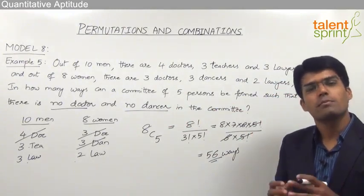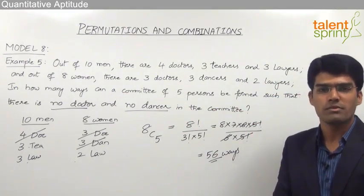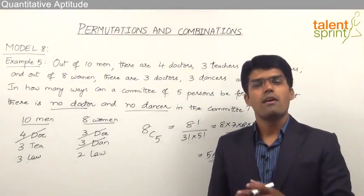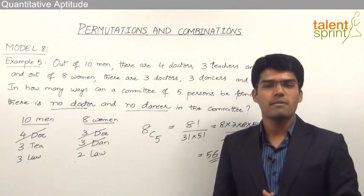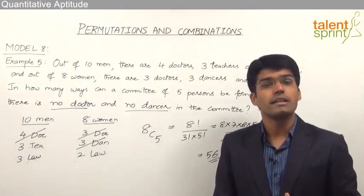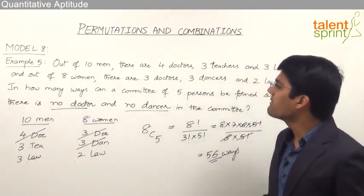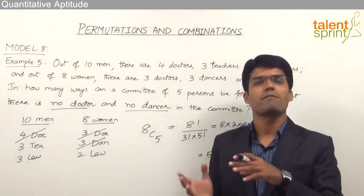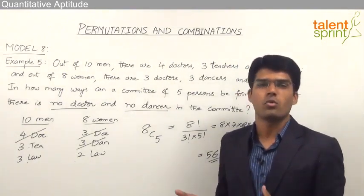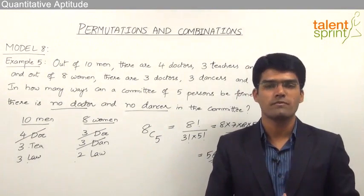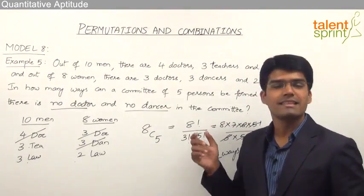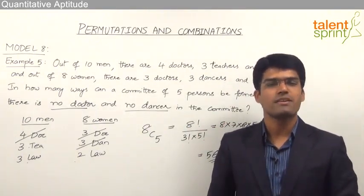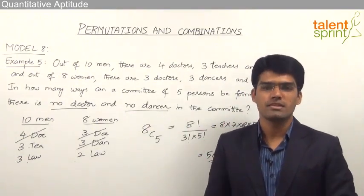Whenever a particular type of person is not required, we simply leave those persons while doing the selections. This is how various types of conditions can be given for questions related to combinations. The object need not always be a person — it could be different colored balls, for example 5 yellow, 3 green, 2 blue and so on. Whatever the type of object, for solving combination questions based on different conditions, we simply go as per the given condition to get the required answer.